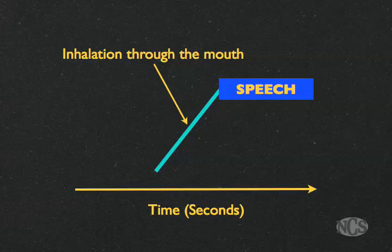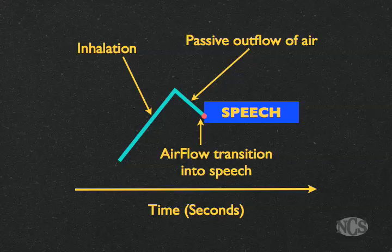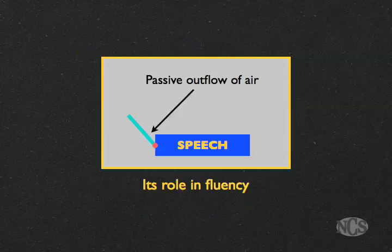What you are going to have to learn to do is to let some air come out of your mouth first, before you speak. Most people don't do that, but that's going to be a requirement. That air coming out is going to be a passive outflow of air. The red dot indicates that that airflow is going to transition smoothly into speech. Let's look at this passive outflow of air and study its role in fluency.